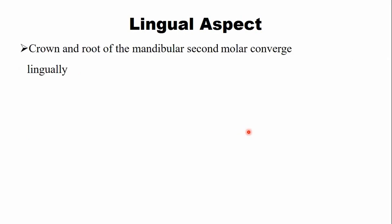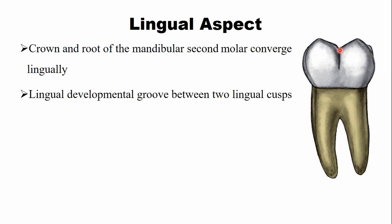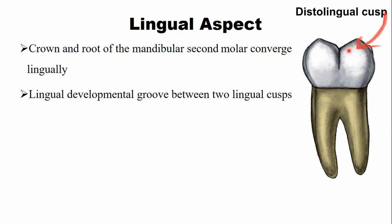From the lingual aspect, the crown and root converge toward the lingual aspect, similar to the first molar and premolars. Because of this convergence, you can see part of the mesial and distal surfaces of the crown and root from this view. The lingual developmental groove serves as a demarcation between the two lingual cusps — the mesiolingual cusp and the distolingual cusp.